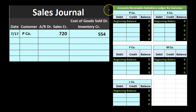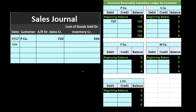As we go, we're going to post to the accounts receivable subsidiary ledger because we'll need to do this line by line no matter what, so we might as well do it as we go. For P Company, the $720 brings the balance up to $720. The next transaction: P Company again, we're going to sell $425 with a cost of $327. We post the $425 to P Company in the subsidiary ledger, bringing the balance from $720 up by $425 to $1,145.